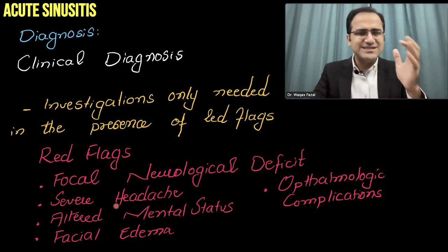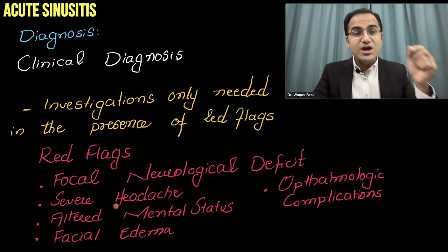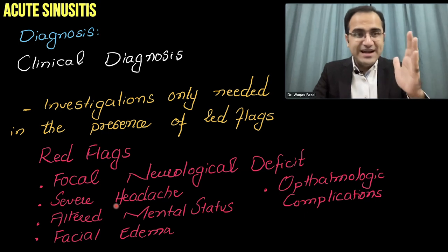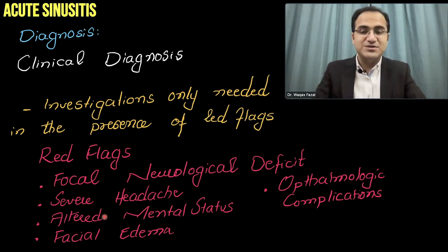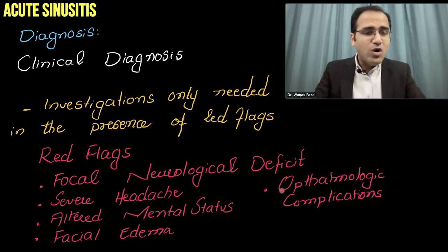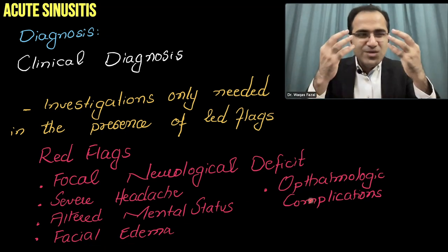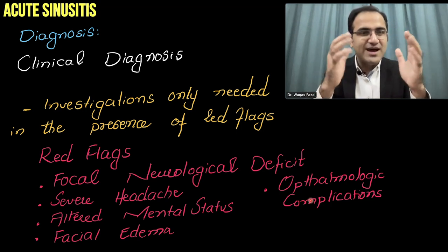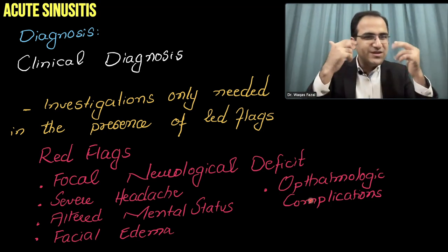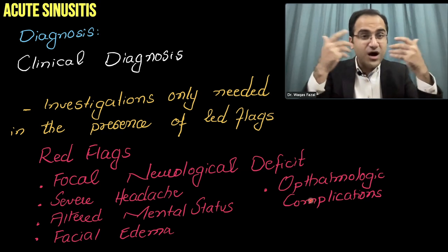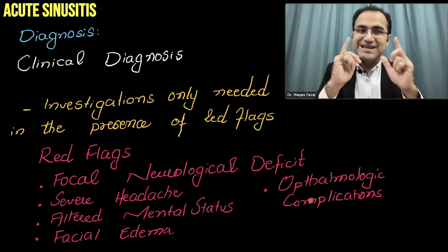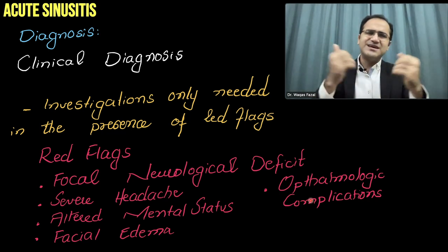Other red flags include severely excruciating headache, altered mental status, facial edema, and ophthalmologic complications. If you suspect orbital cellulitis or swelling or inflammation of the eye, it means the infection is spreading out of the sinuses toward the brain, and imaging is required. Otherwise it remains a clinical diagnosis.